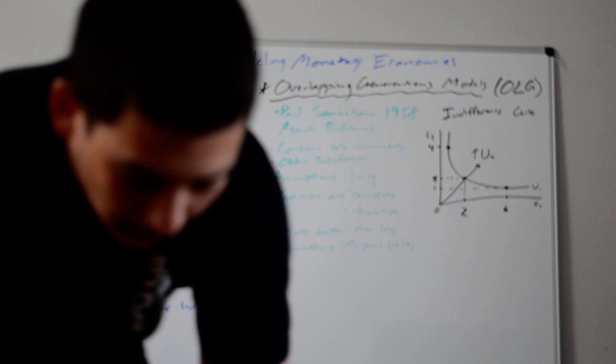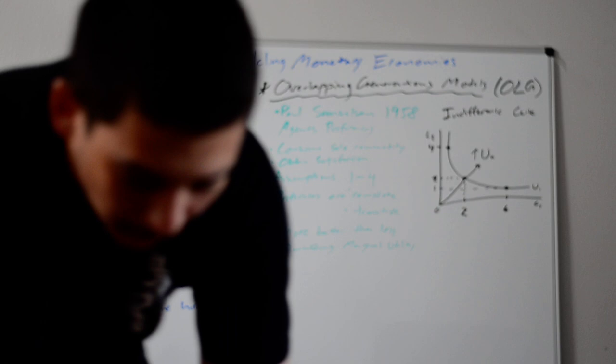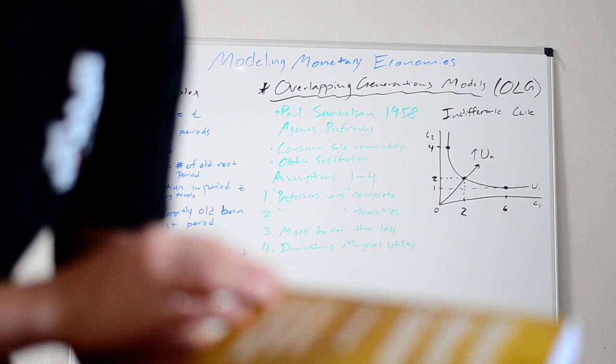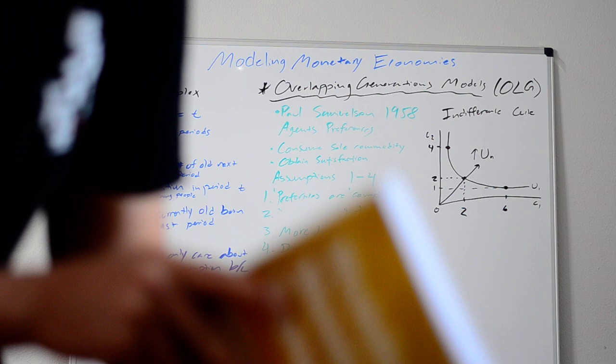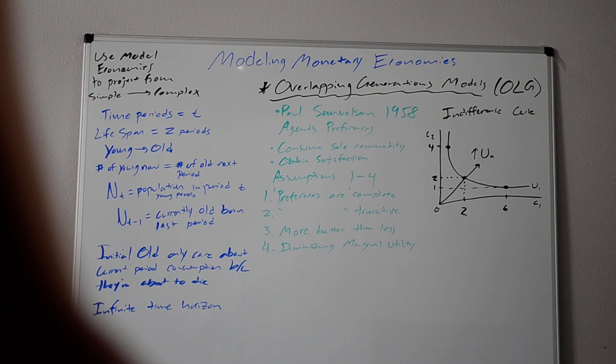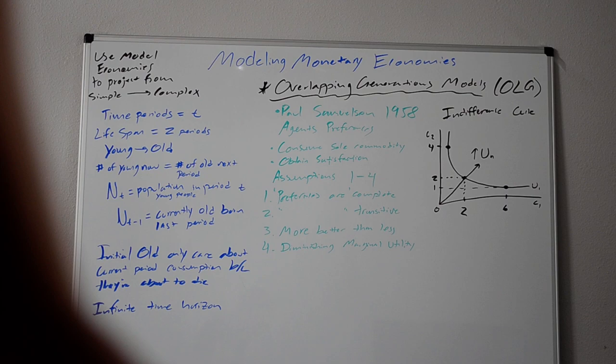This will be the first video based off of the Modeling Monetary Economics textbook. Obviously the link for this will be in the description. It's a book, this is the sixth edition, or fifth, by Bruce Champ, Scott Freeman, and Joseph Haslag. We used the fourth edition in my class. This book is slightly updated with some more information about cryptocurrencies and newer developments in modern day economies.